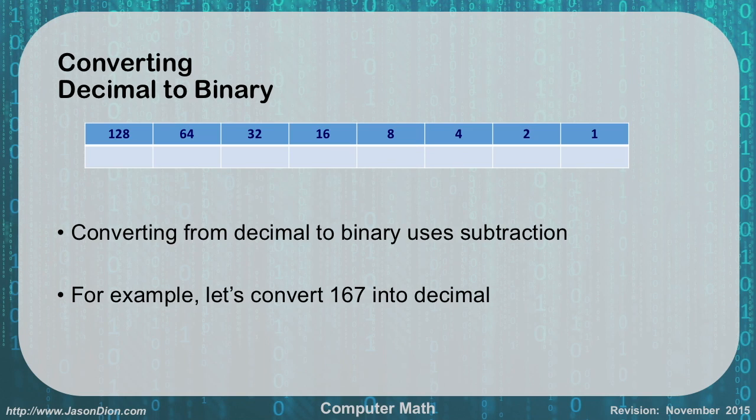Now if I wanted to go from decimal to binary, it's a little bit more difficult, but we still use the same table. If we want to convert 167, for instance, what we're going to do is we're first going to say, starting from left to right, what is the biggest number that will go into 167?